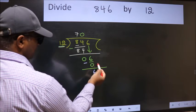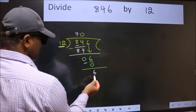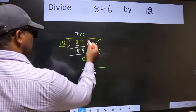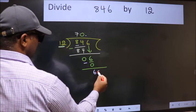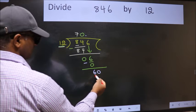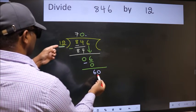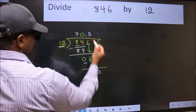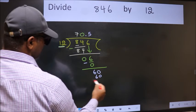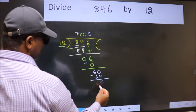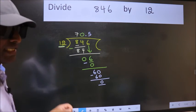When do we get 60 in 12 table? 12×5=60. Now we subtract, we get 0.